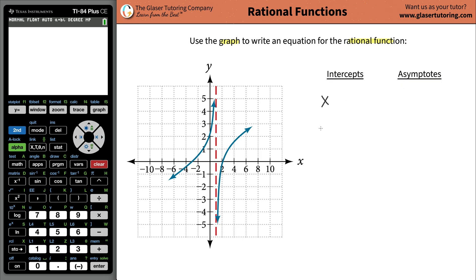The first thing is going to be the intercepts. We've got two types of intercepts: X and Y intercepts. Remember the X intercepts are where the function crosses the X axis. So it crossed at X equals two and it also crossed at X equals three.